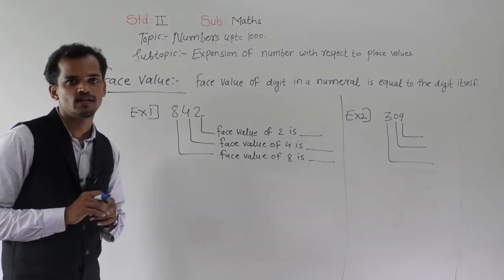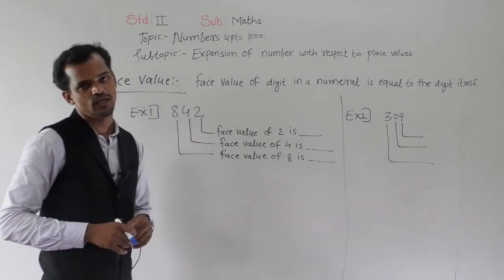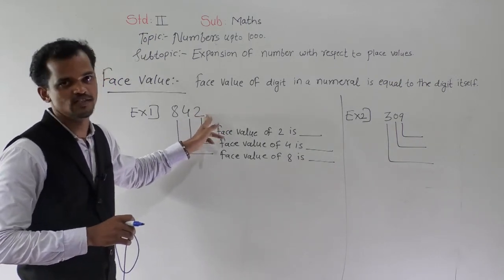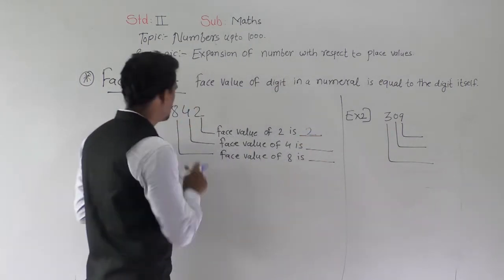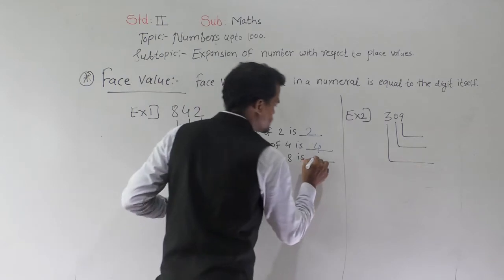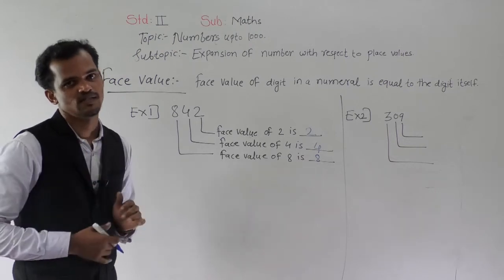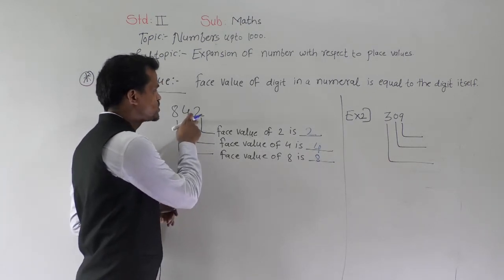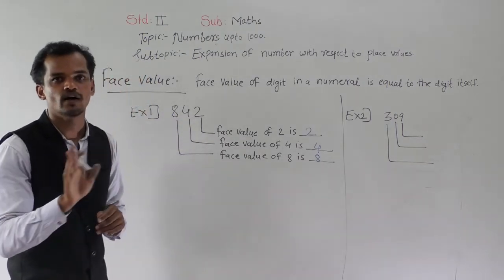See, I will explain one example so you will understand. Read this number: 842. Face value of each digit is nothing but that digit itself. So, face value of 2 is 2, face value of 4 is 4 and face value of 8 is 8. The face value of 8 is 8 — it does not change, it remains the same.